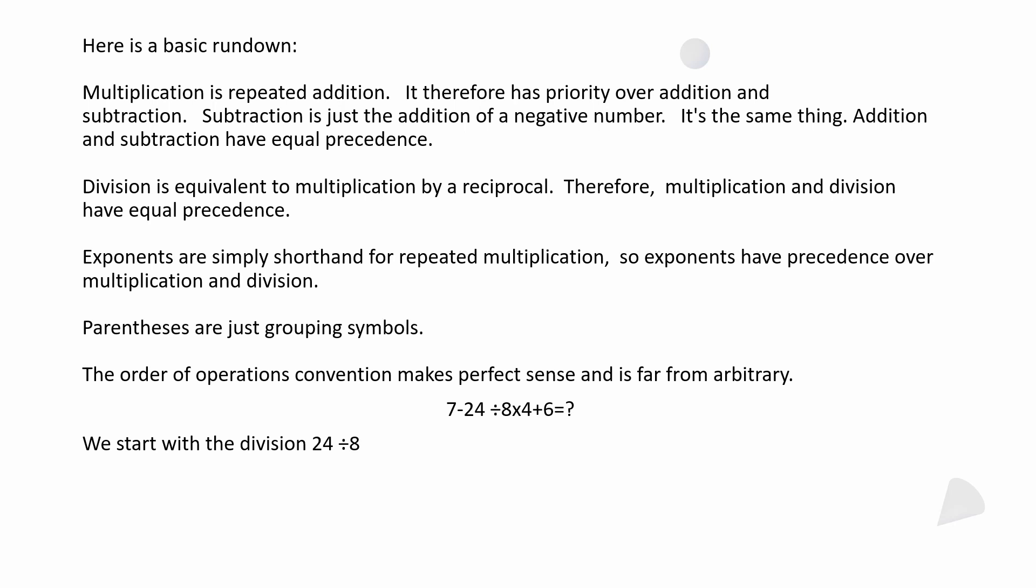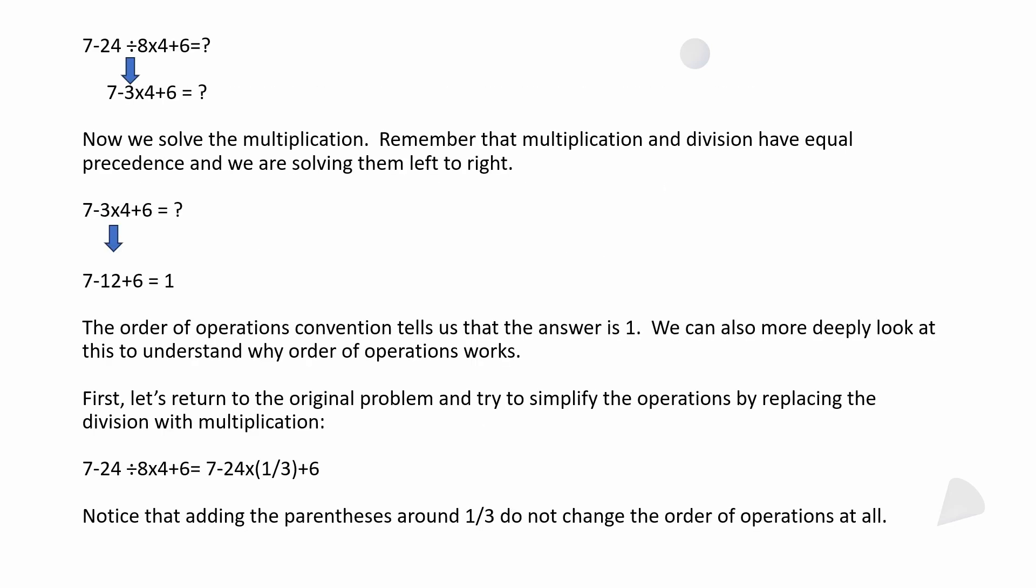In this problem, if you look at it, we've got division as the highest priority operation here. So the first thing you're going to do is do the 24 divided by 8. So if we do 24 divided by 8, we're going to simplify this down to 7 minus 3 times 4 plus 6. Now next, we're going to solve the multiplication because the multiplication and division have equal precedence, so we're just solving them left to right. We did the division first because it was to the left. Now you do the multiplication. So we're going to end up with 7 minus 12 plus 6.